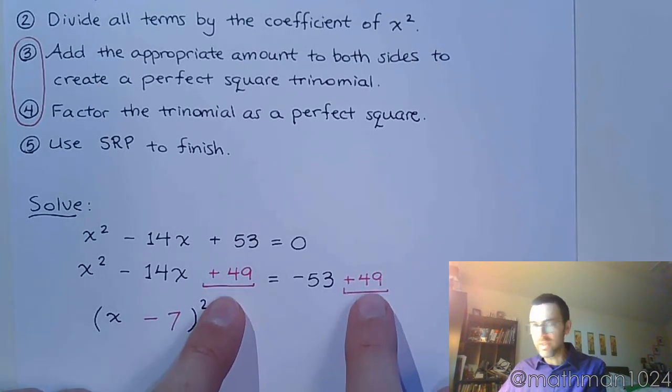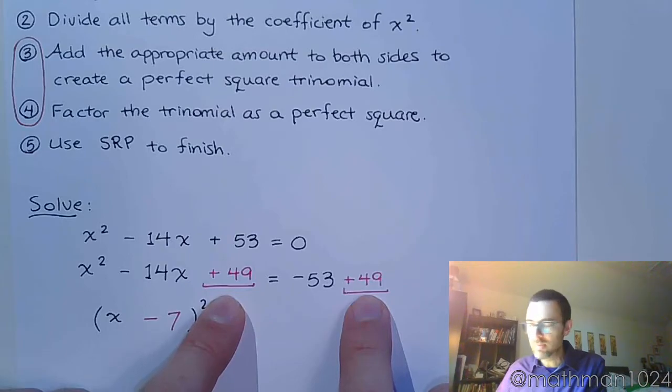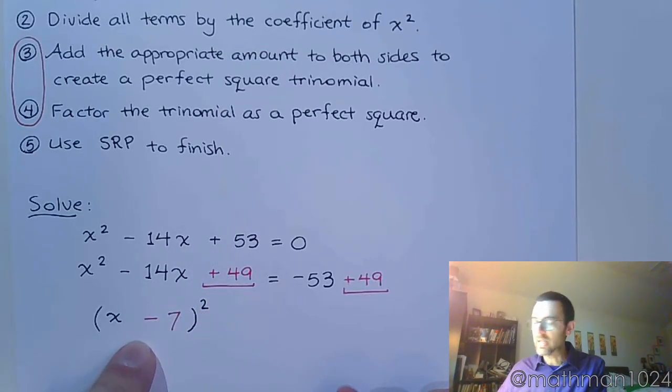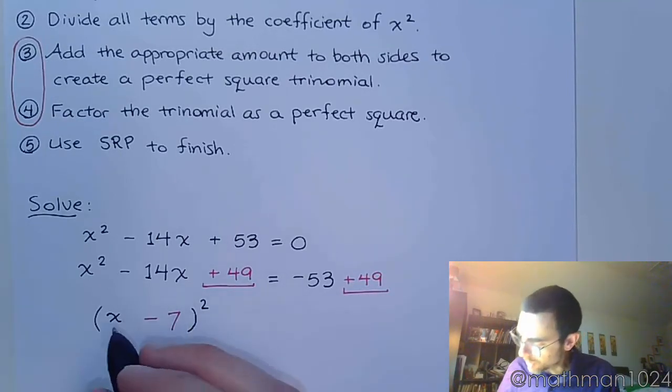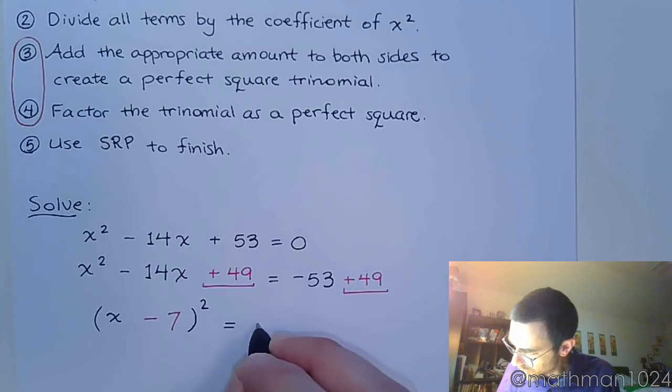So, now, this creates balance. I needed this 49 so that I could factor on the left side. I needed this 49 to maintain the balance. So, we end up with x minus 7 quantity squared is equal to negative 4.